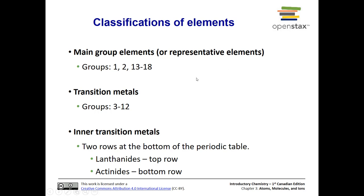Groups 1 and 2 and 13 through 18 are main group elements; transition metals are groups 3 through 12. Those last two rows at the bottom of the periodic table — the top row is the lanthanides and the bottom row is the actinides — we won't deal with those much in this class.